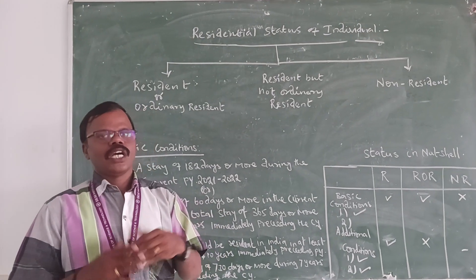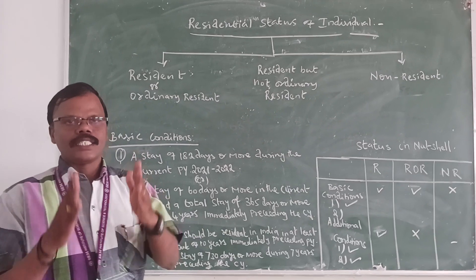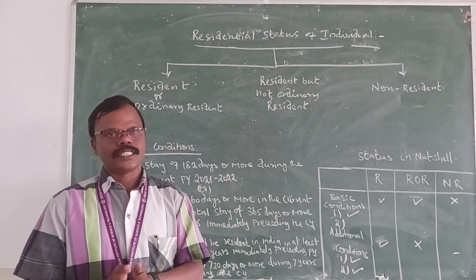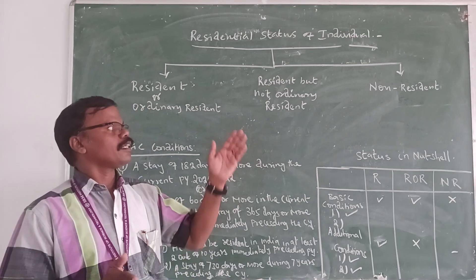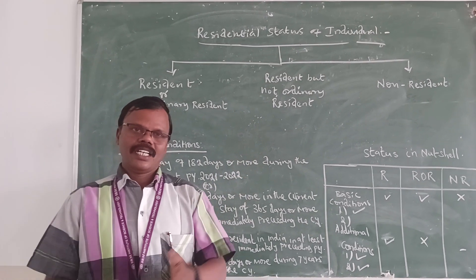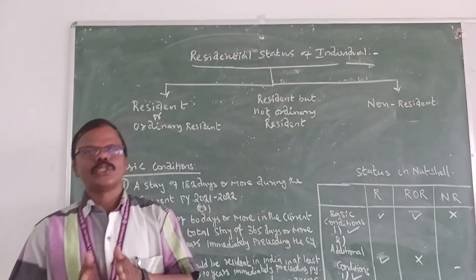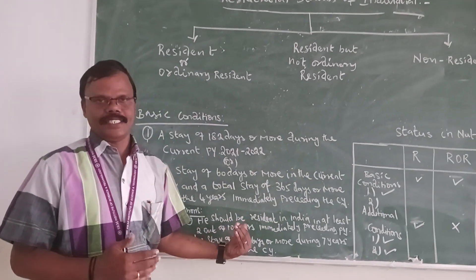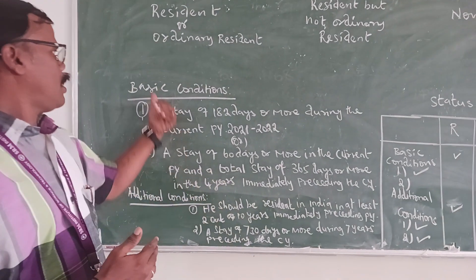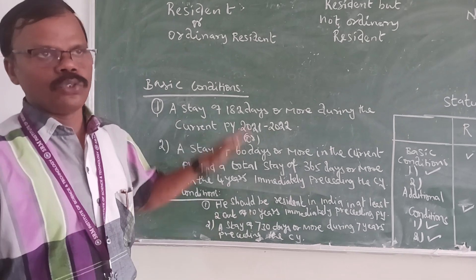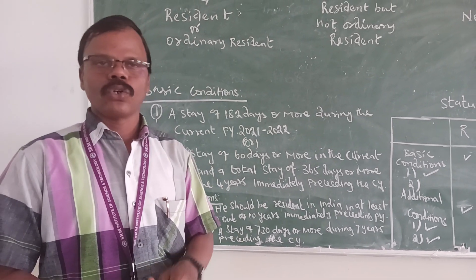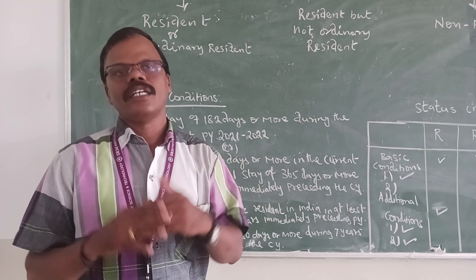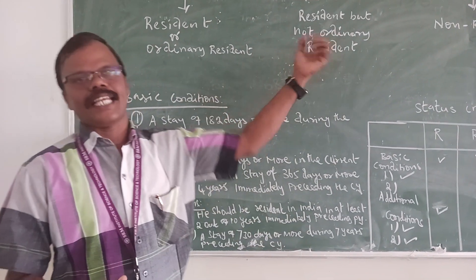How to determine whether a person is called Resident and Ordinarily Resident, Resident but Not Ordinarily Resident, or Non-Resident — these three statuses of the individual person are identified under two conditions: basic condition and additional condition. These two conditions are used to find out the people's status.